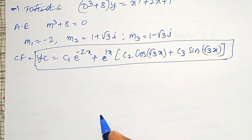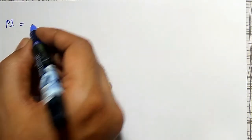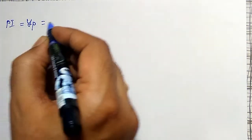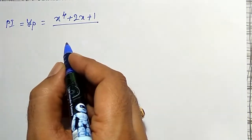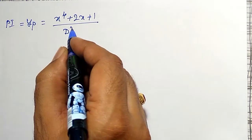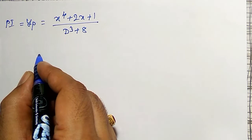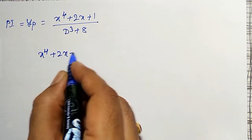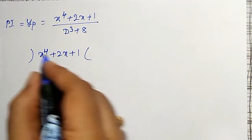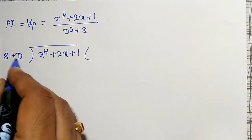The first part is over. Now the second part of the solution — the particular integral yp — is equal to (x⁴ + 2x + 1) divided by (d³ + 8). We will solve this by the actual division method, dividing x⁴ + 2x + 1 by ascending powers of x, that is (8 + d³).